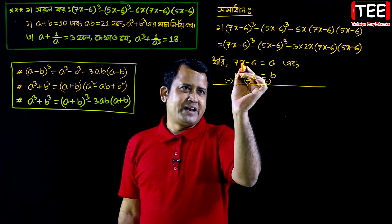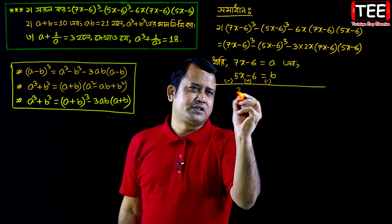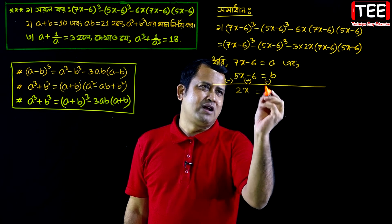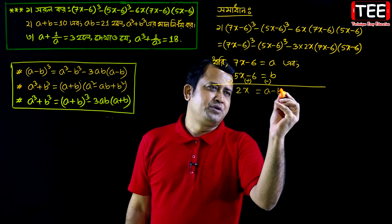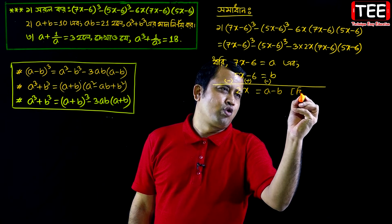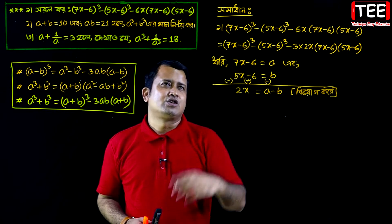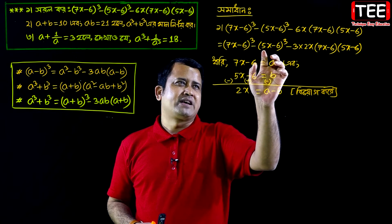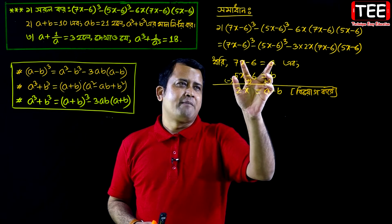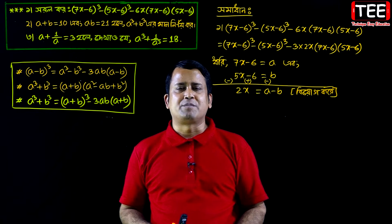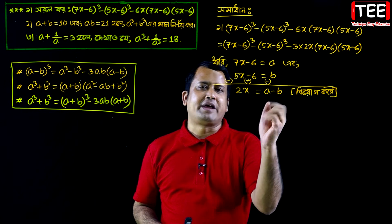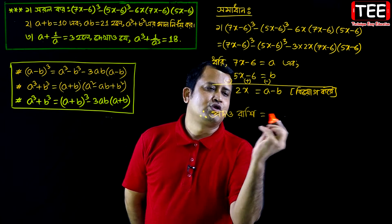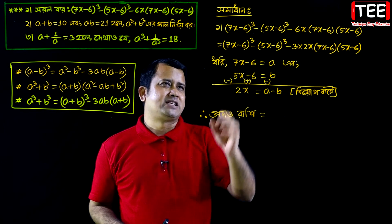We know the identity: a cube minus b cube minus 3ab into a minus b equals a minus b whole cube. Here a minus b is 2x, so we can use this identity directly to simplify the given expression.